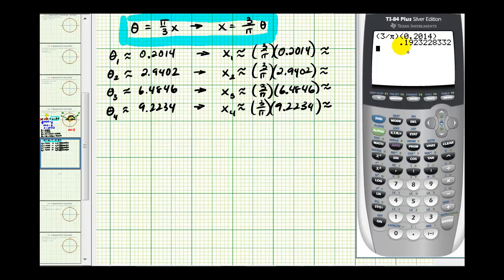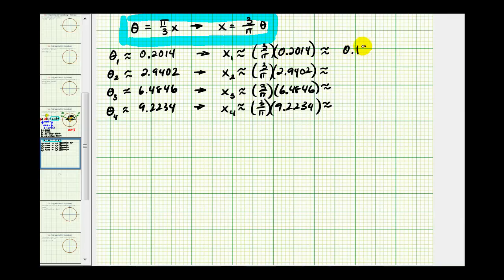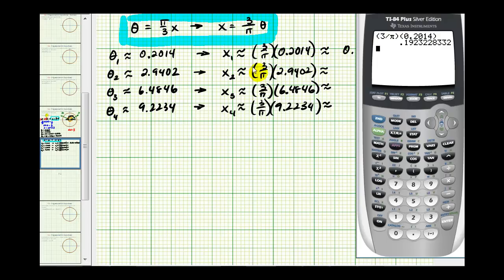So x₁ is approximately 0.192 radians. And now for x₂, I'll just press second enter, and then I can change this factor here: 2.9402. So x₂ is approximately 2.808.